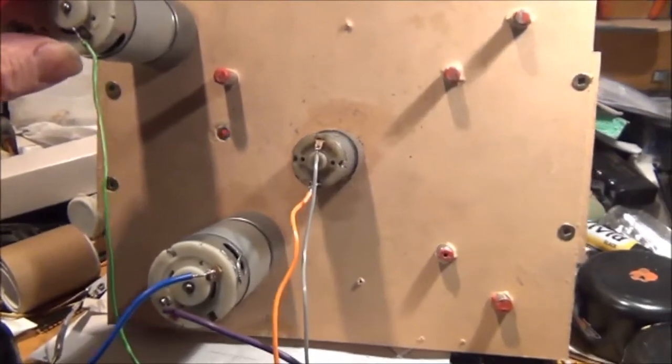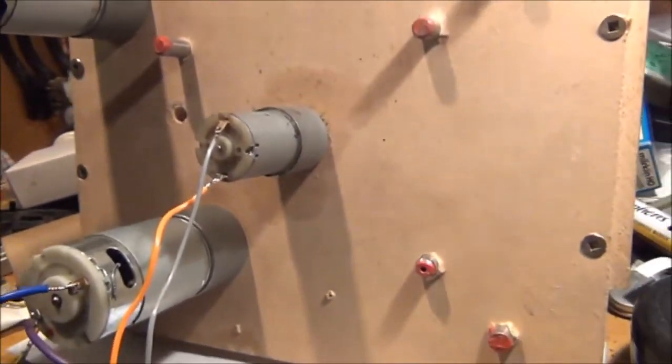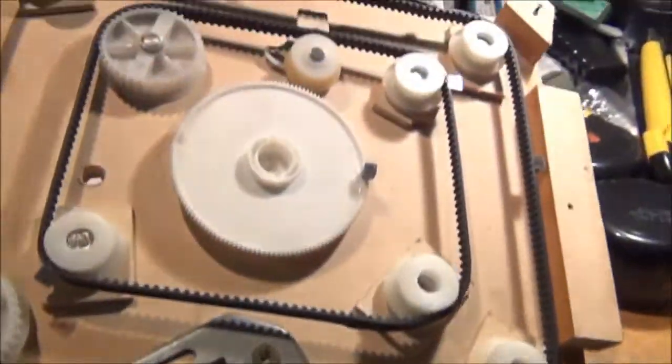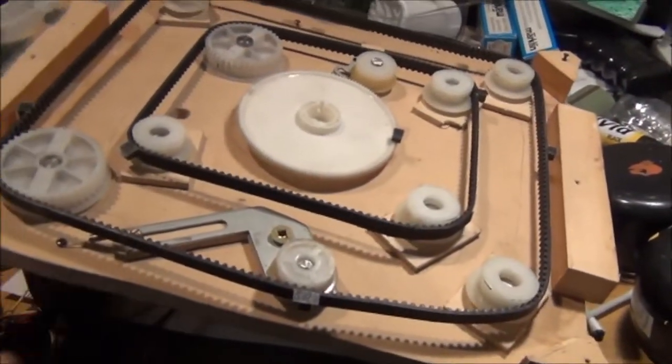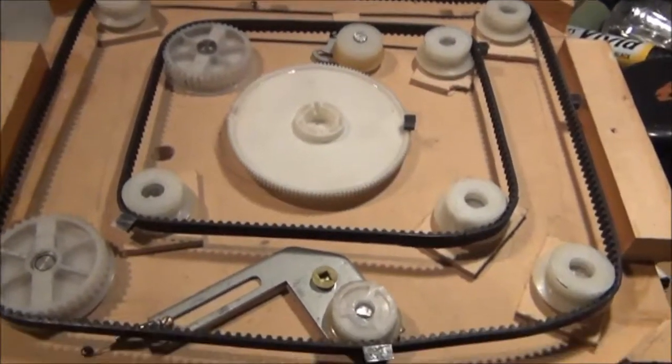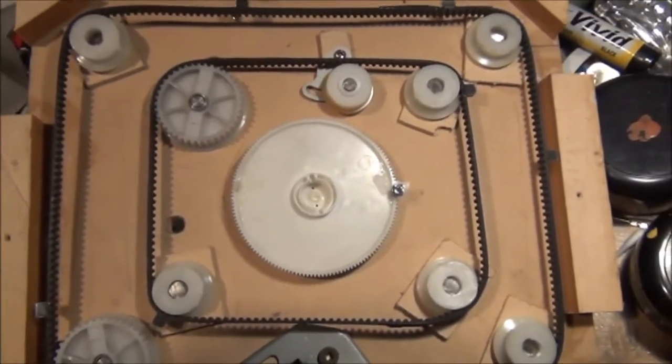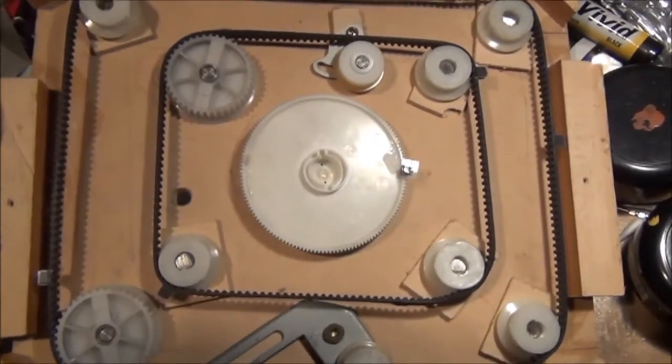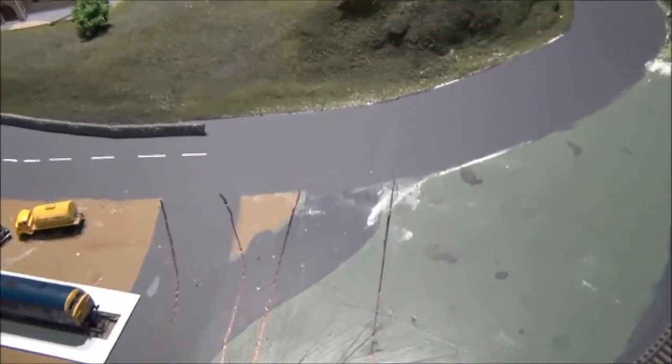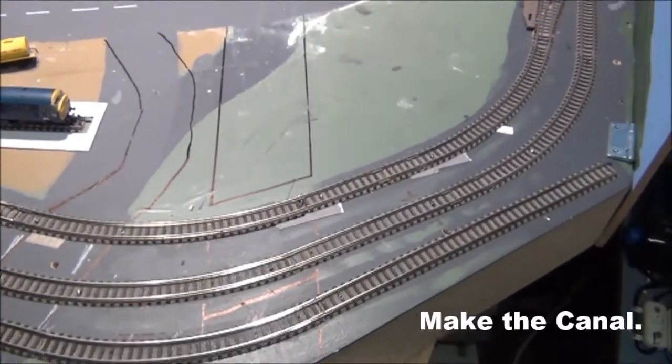That's the motor underneath - I believe they come out of photocopiers, as do all the belting and the pulleys. If you know someone who's got a business pulling apart old photocopiers, have a word with them - you might be able to get some of this mechanism and do the same. Before I cut this out, I'm actually going to make the base for the canal.